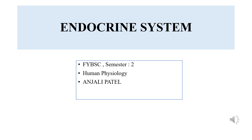In Part 1 of the endocrine system module 1, we studied what the endocrine system is, how it functions, and what are the different organs or glands present in the human body under the endocrine system. Now in this Part 2 video, we will study each one of the glands in detail — how they are placed in the human body and what are their functions.